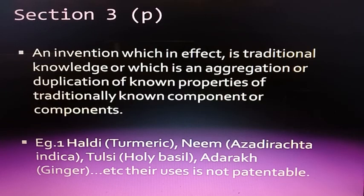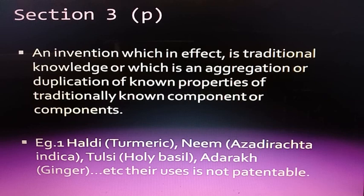Section 3P: An invention which in effect is traditional knowledge, or which is an aggregation or duplication of known properties of traditionally known components, is not patentable. Examples include Haldi, Neem, Tulsi, Adrak, etc. — these are all traditionally known plants recognized for their properties.